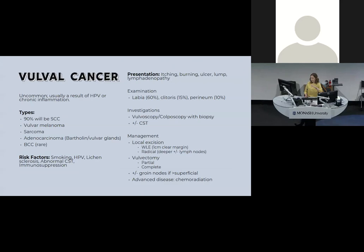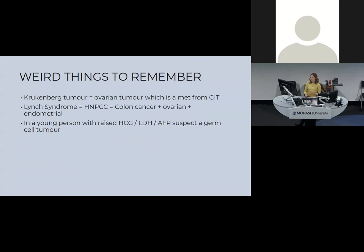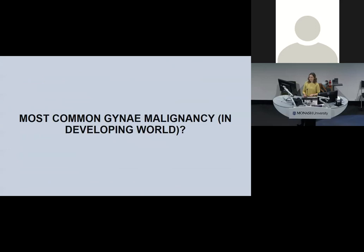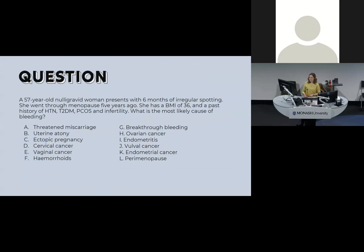A few things Monash loves: Krukenberg tumours — an ovarian tumour that is a metastasis from the GIT system — come up surprisingly often in exams. Lynch syndrome (HNPCC) — keep that in mind if someone has a strong family or personal history of relevant cancers. In a young person with raised HCG, LDH, and AFP, suspect a germ cell tumour — but always rule out pregnancy first. The most common gynae cancer in Australia is endometrial; in the developing world it's cervical. Thank you.